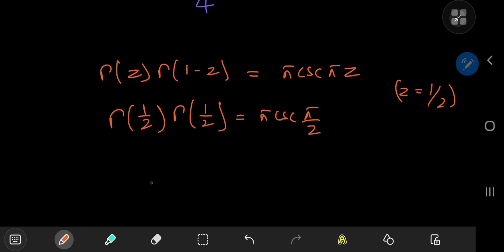And the cosecant of pi by 2 is just 1. And so this implies that the square of the gamma function evaluated at 1 half equals pi, which implies that gamma 1 half equals the square root of pi.